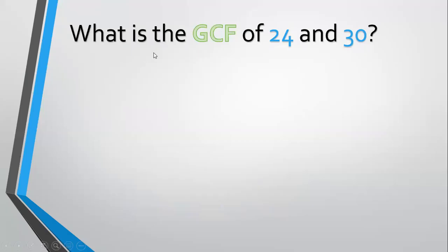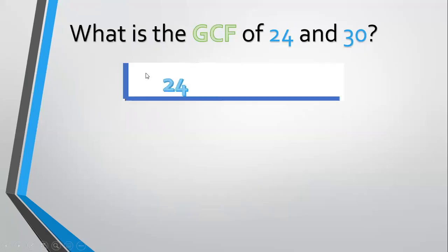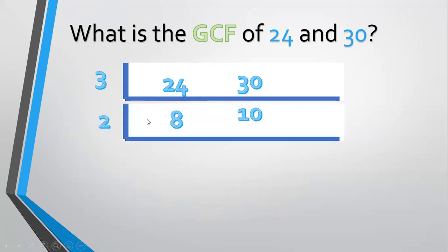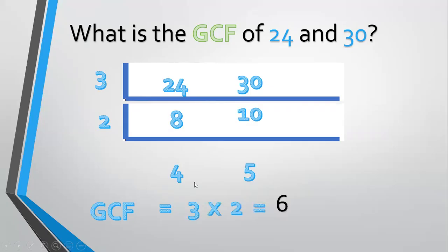Another example, what is the GCF of 24 and 30? Align 24 and 30. Divide by a prime common factor, 3. 24 divided by 3 equals 8. 30 divided by 3 equals 10. Divide again by 2. 8 divided by 2 equals 4. 10 divided by 2 equals 5. 4 and 5 have no prime common factor, so the GCF is equal to 3 times 2 equals 6.